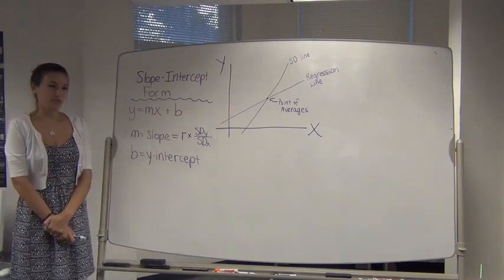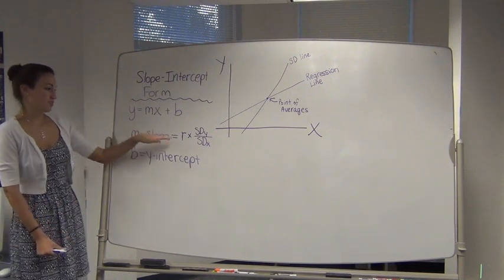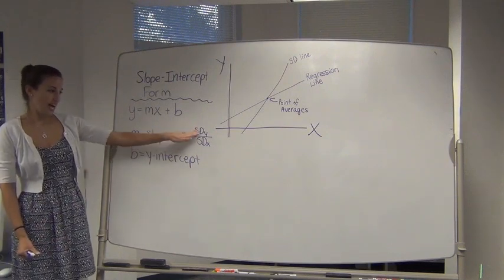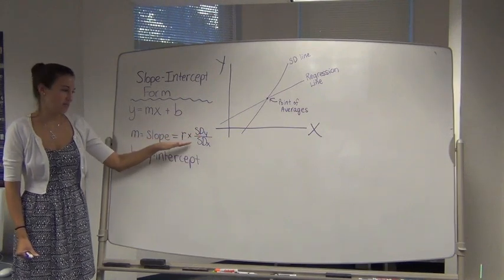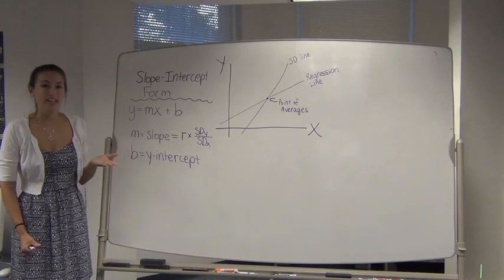So in Chapter 7, we learned that the formula for slope was the correlation coefficient times the sd of y divided by the sd of x. So we know how to solve for m, our slope. We've already learned that.